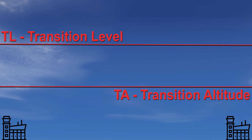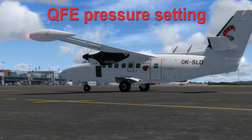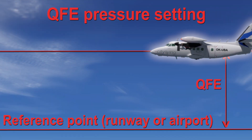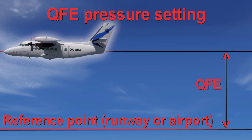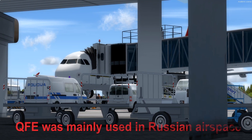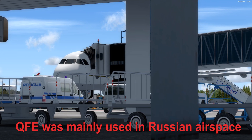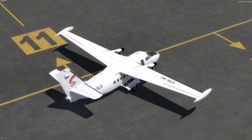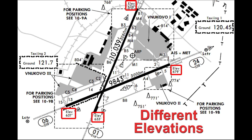Let's now look at the last common pressure setting, which is QFE. QFE is the isobaric surface pressure at the reference point, meaning that when we are at the reference point, the altimeter should show a height equal to zero. QFE was mainly used in Russia and some other countries, where after passing the transition level you were given the QFE instead of QNH.